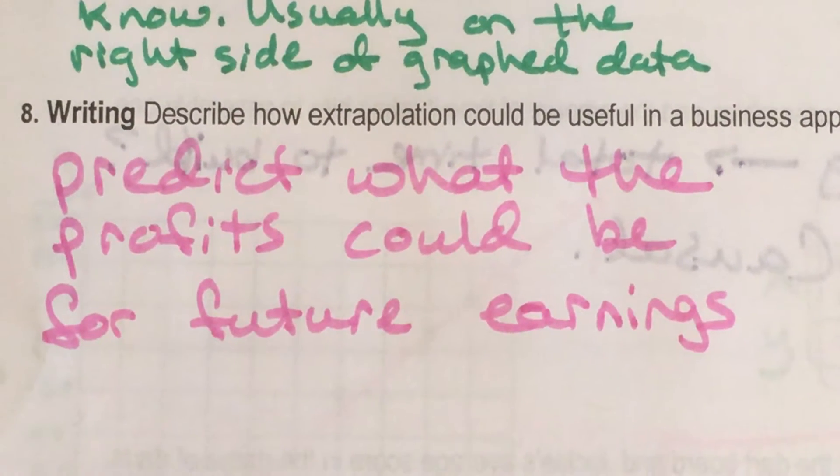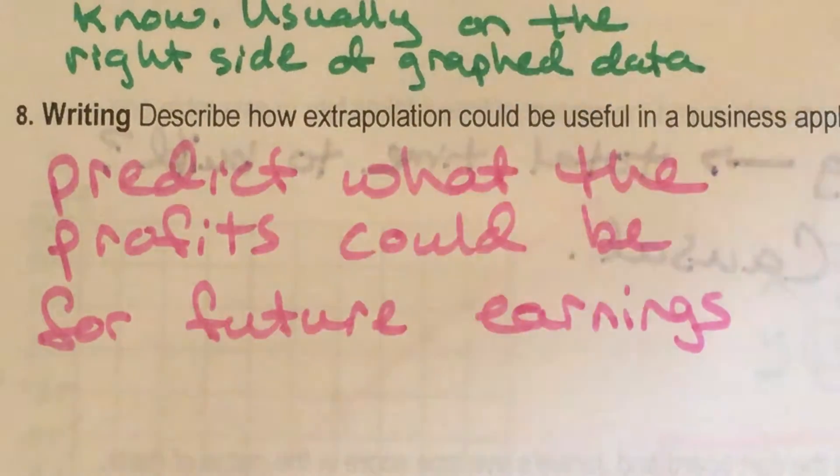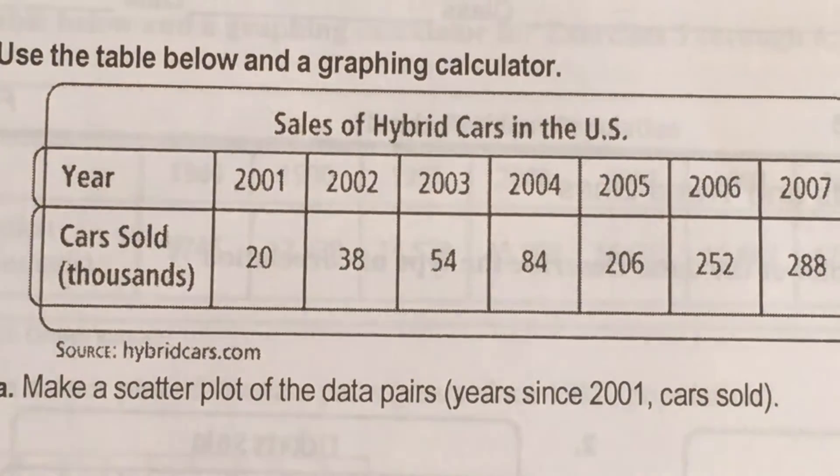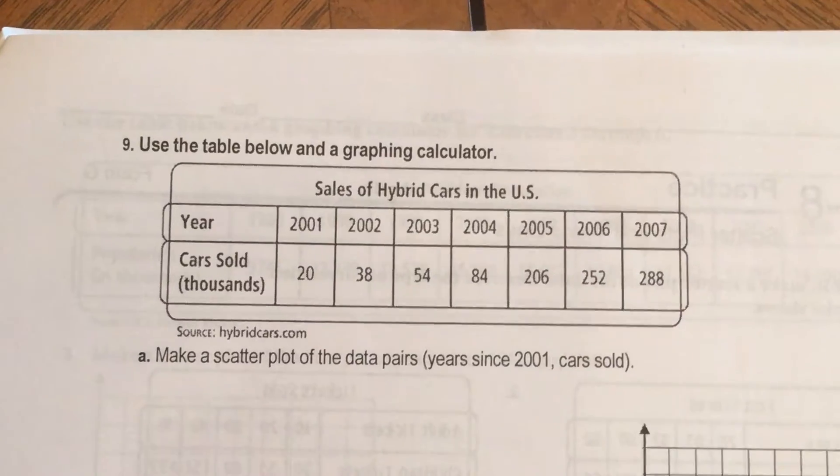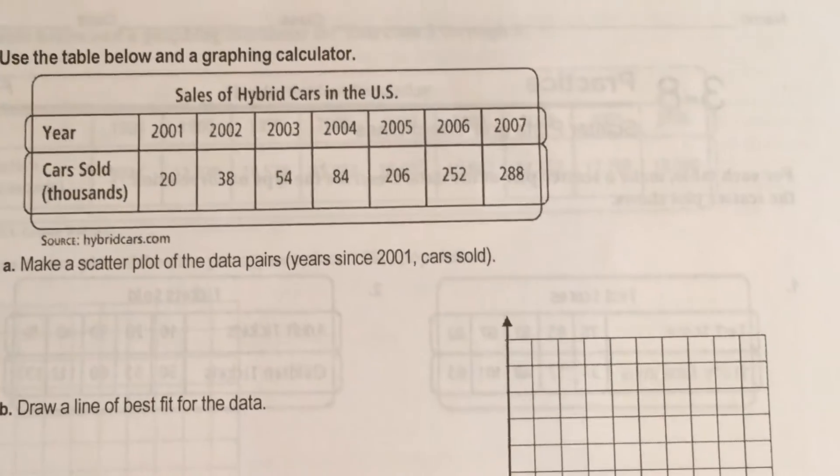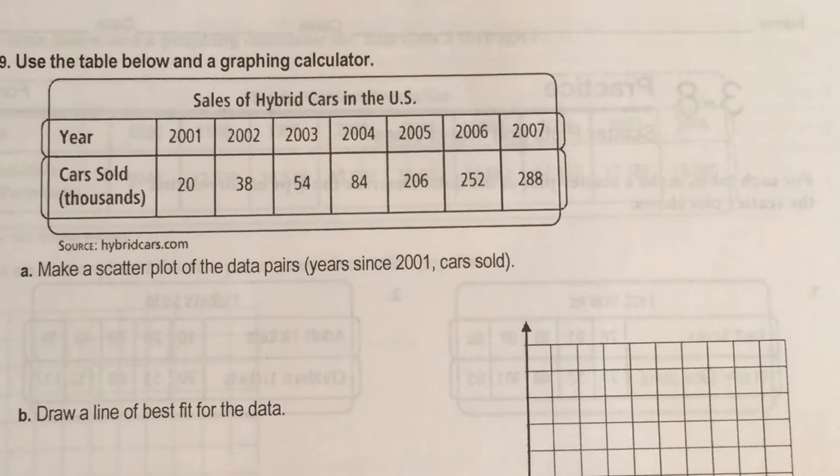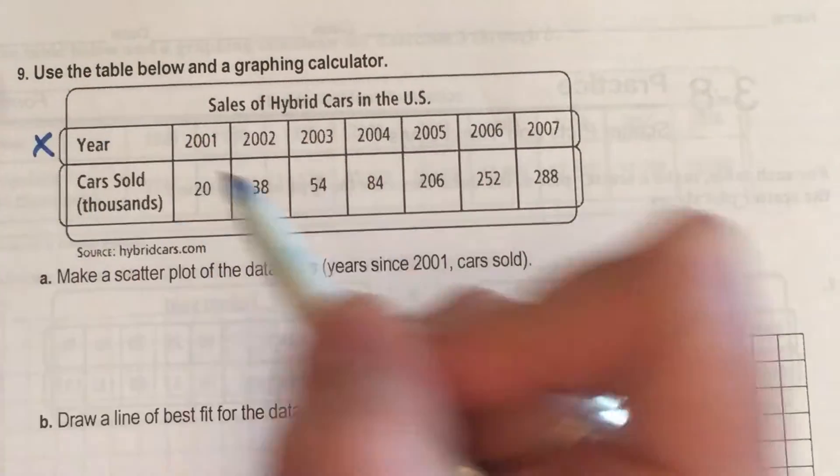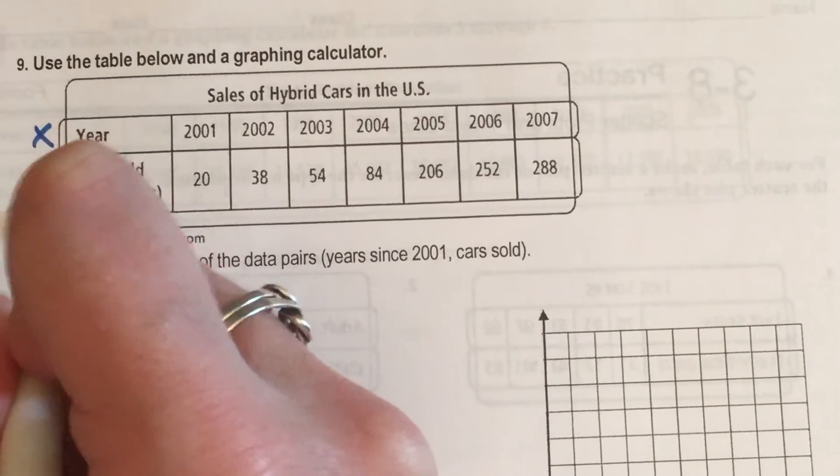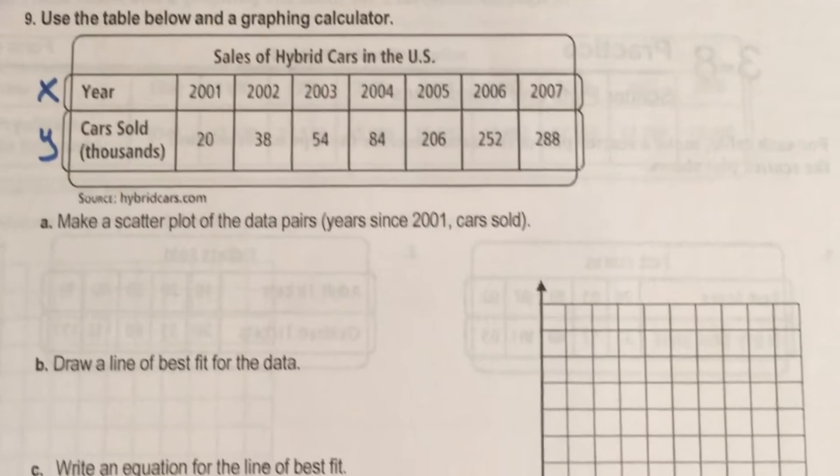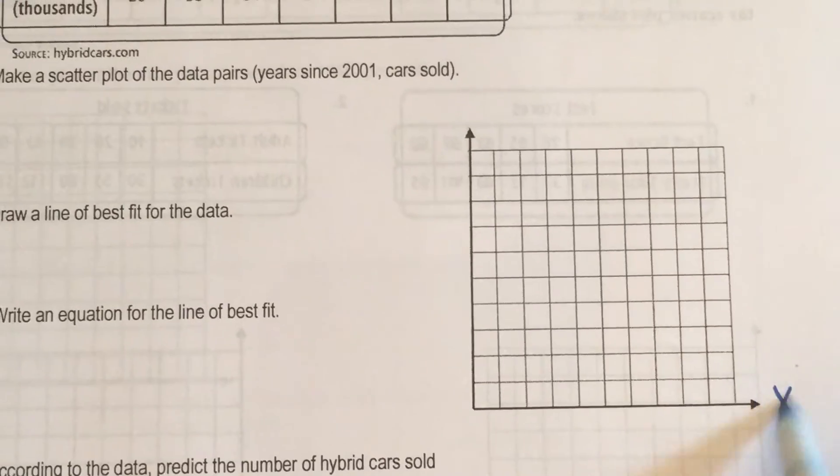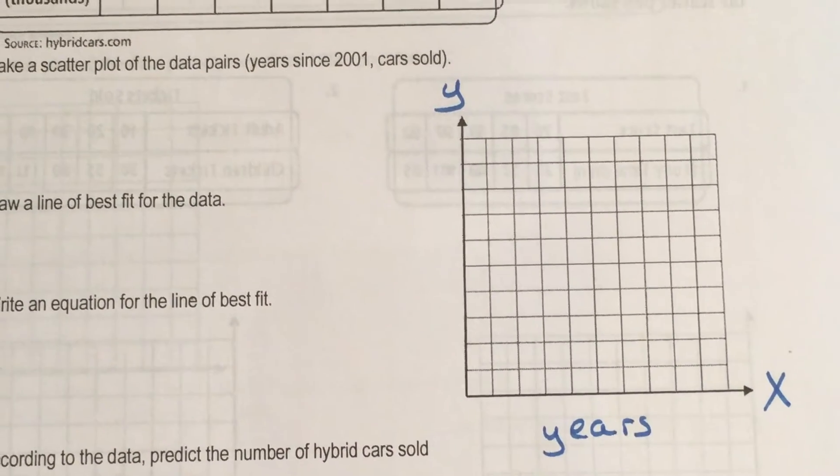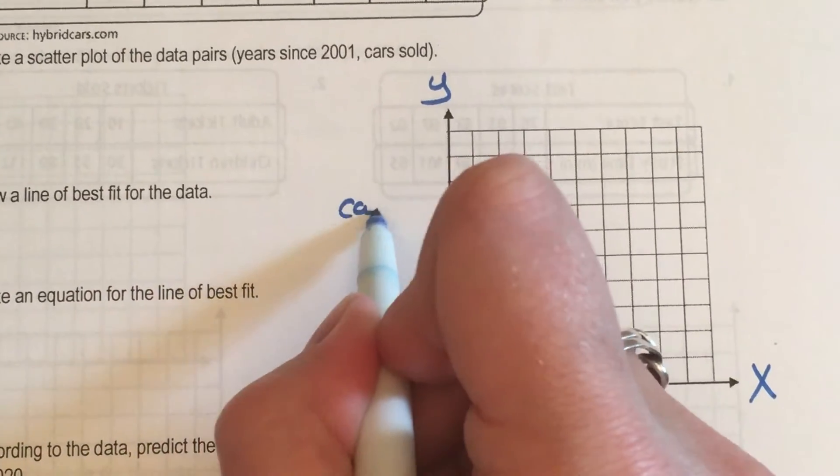All right. So number nine. This is going to be the last one that we do together. Number nine. We're going to do this quick. We're going to label our graph. And then you're going to use the calculator. And you're going to find out what the equation is going to be. All right. So here is our table. We know the years. That's time. That's X. Cars sold. That's Y. That's the result. Let's go label our graph. So here is X. There's Y. We know that X from our table is years. We know that Y from our table is cars sold.